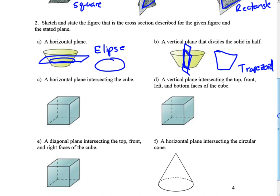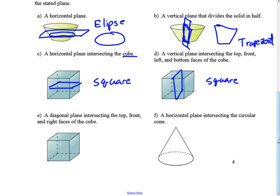A horizontal plane intersecting a cube — since a cube is like a bunch of squares stacked on top of each other, the cross section is a square. A vertical plane through the cube would also be a square. For a diagonal plane intersecting the top, front, and right faces of the cube, depending on how it's sliced through, this could be a triangle.